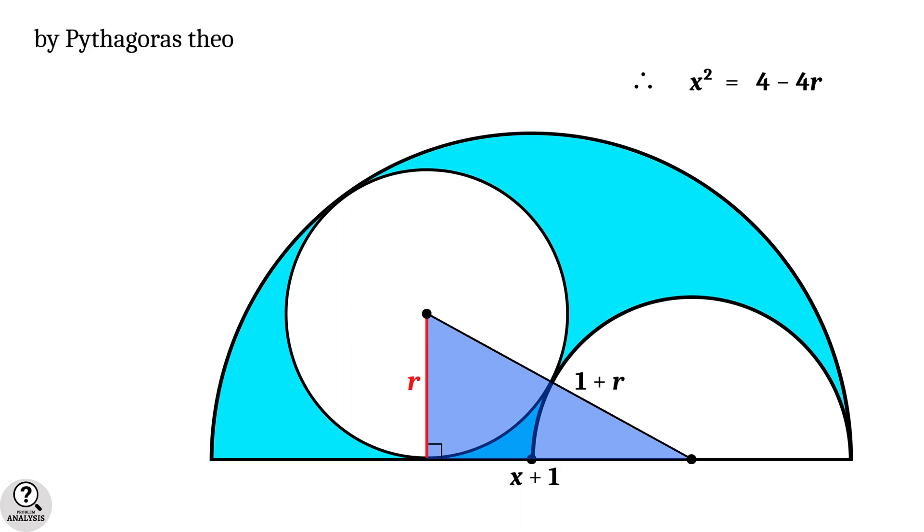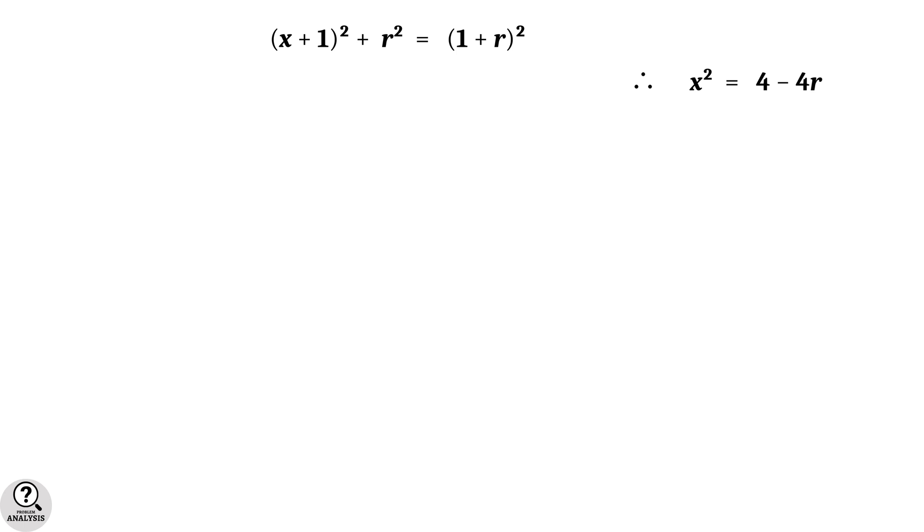Then by applying Pythagoras theorem, we will get X plus 1 whole square plus R square equal to 1 plus R whole square. Now expand both sides of the equation. Left hand side become X square plus 2X plus 1 plus R square, and the right hand side become 1 plus 2R plus R square.